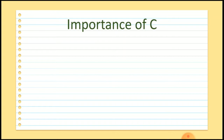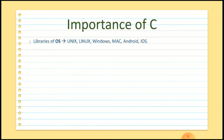After that, most of the applications and software which we are using were written in C language. Most of the libraries of today's operating systems are written in C language. So basically, almost every operating system which we are using is created using C language.